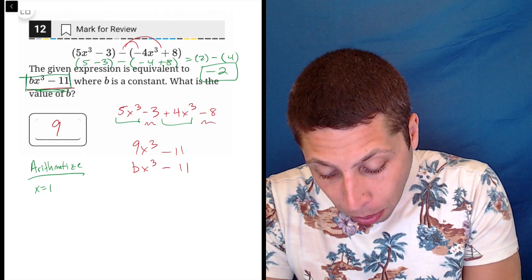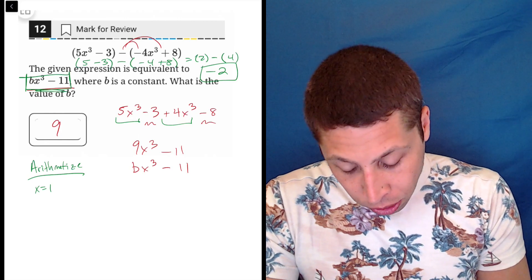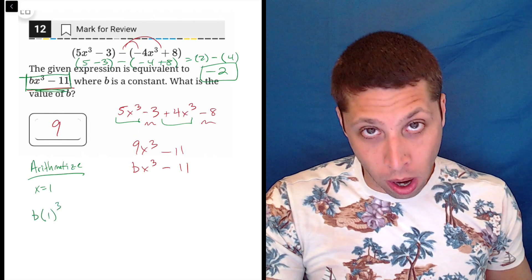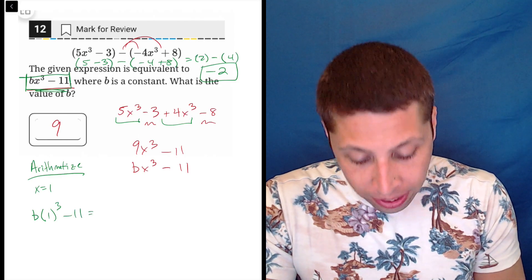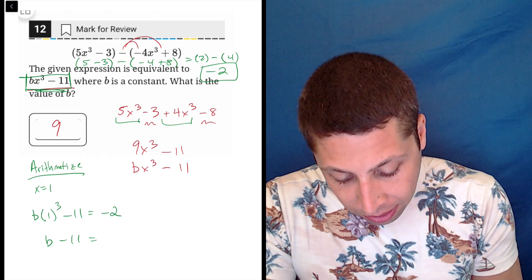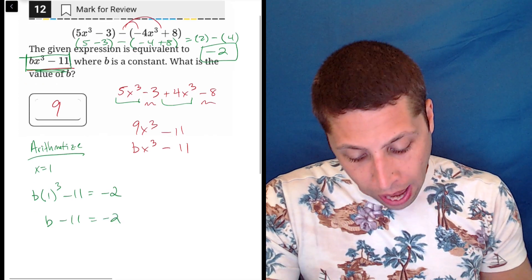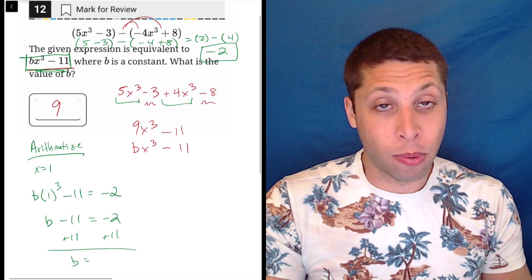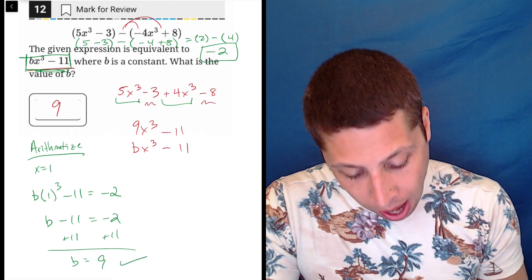And now I'm going to say, okay, well, this is supposed to be equal to that as well. So b, we don't know, but we know x is 1, we made that up, minus 11. And that's supposed to also be equal to negative 2. So b minus 11 is negative 2. And then just solve for b by adding 11 to both sides. B is, well, negative 2 plus 11 is 9. So it works out.